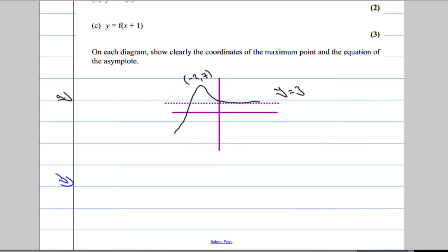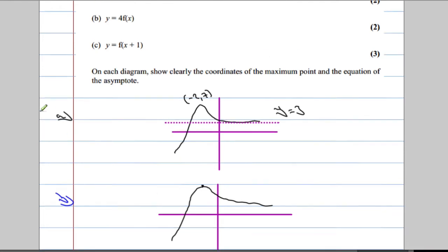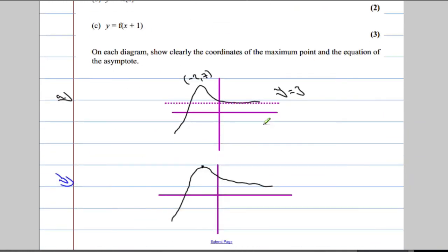So what we end up with, when we do our little sketch, is similar shape. Only this time, the maximum is no longer negative 2, 5. It's 4 times higher. It's now negative 2, 20.